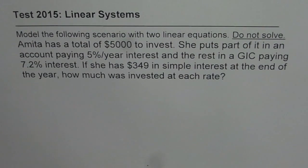She puts part of it in an account paying 5% per year interest and the rest in a GIC paying 7.2% interest. If she has $349 in simple interest at the end of the year, how much was invested at each rate?